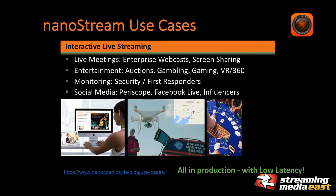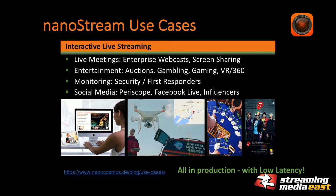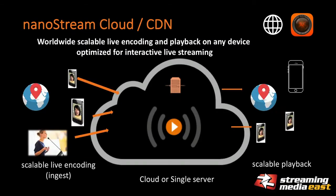Interactive live streaming creates a lot of new use cases and business opportunities. Some customer use cases: live meetings like enterprise webcasts or screen sharing, entertainment applications like auctions, gambling, or 360 VR — all of which require interactivity, and many more. To connect both the live encoding and live playback parts and provide the best performance in terms of latency and scalability, we created NanoStream Cloud, which provides an encoding, streaming, and playback solution for ultra-low latency delivery worldwide.